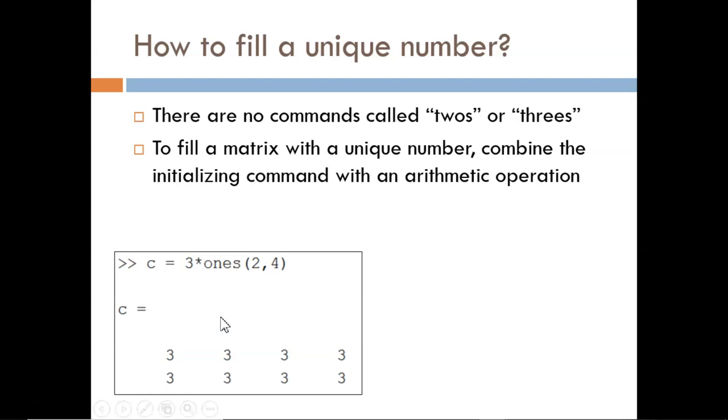The first example shows creating a matrix of all threes. It does this by first creating a ones matrix of the desired size, and then multiplying by 3. The second example shows creating a matrix of all fives. Here we first make a zeros matrix of the desired size, and then add 5 to all of those zeros.